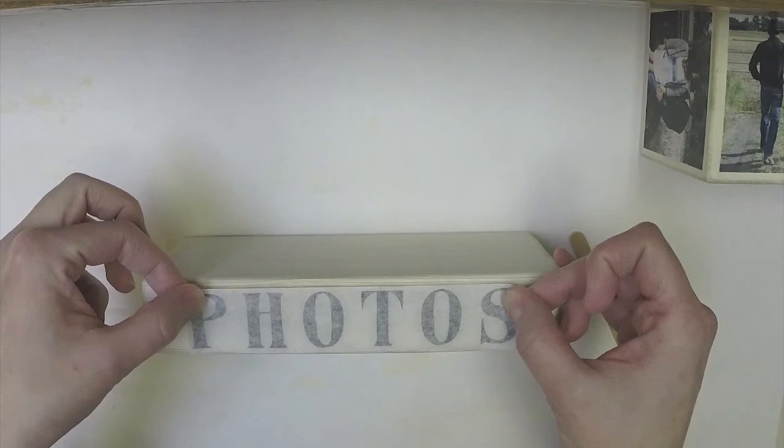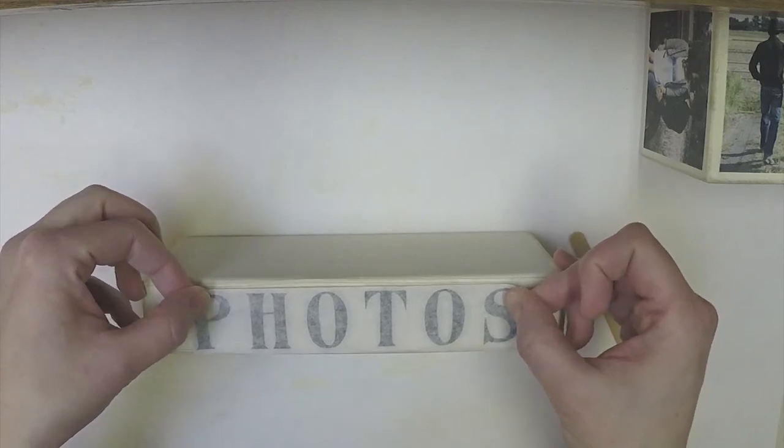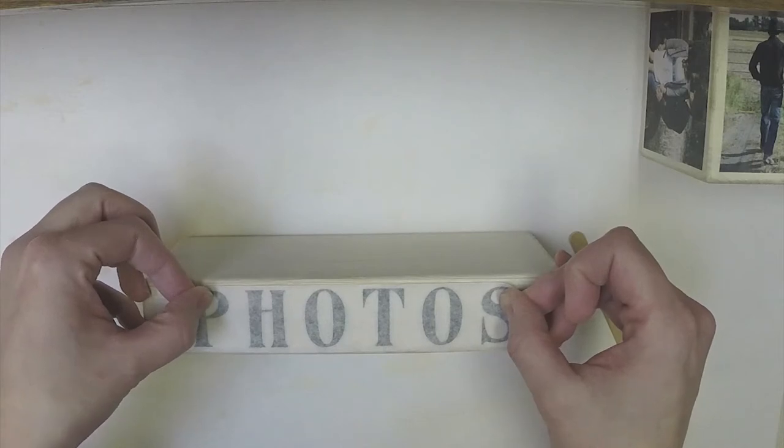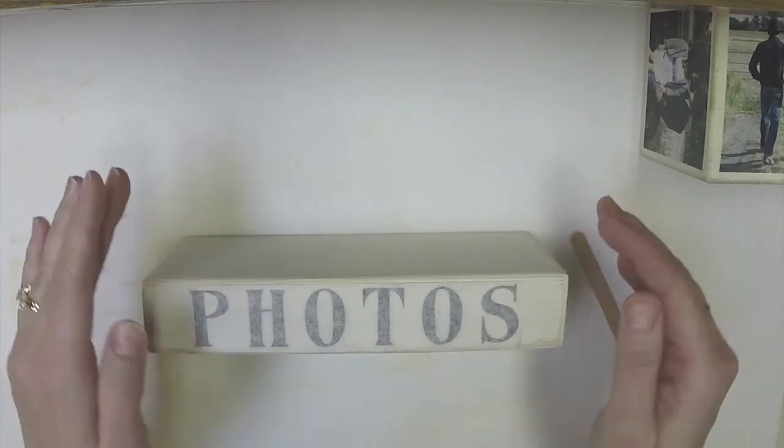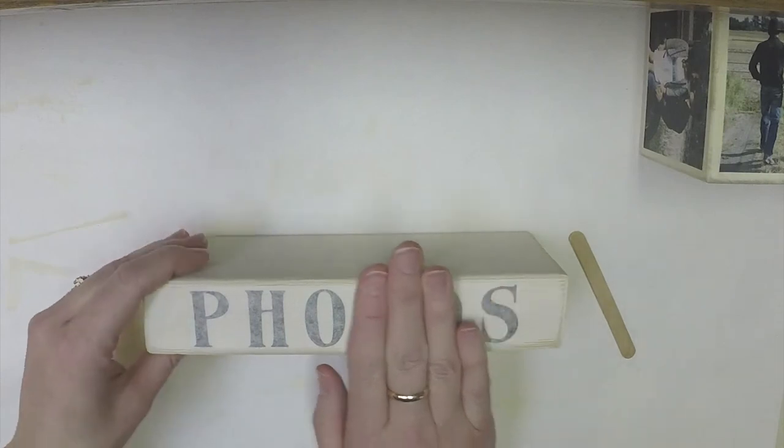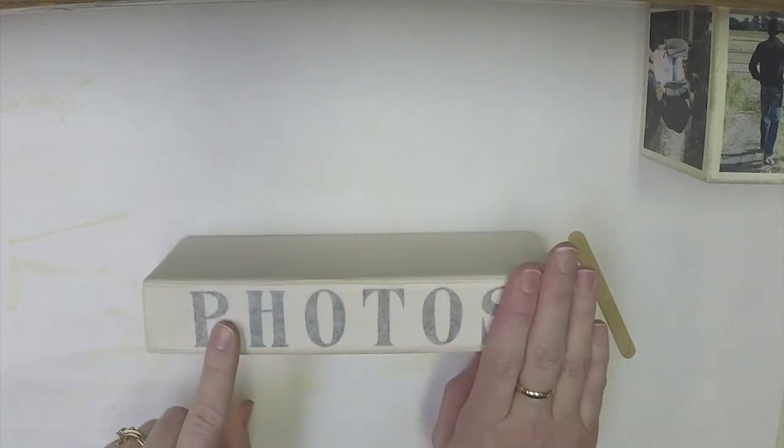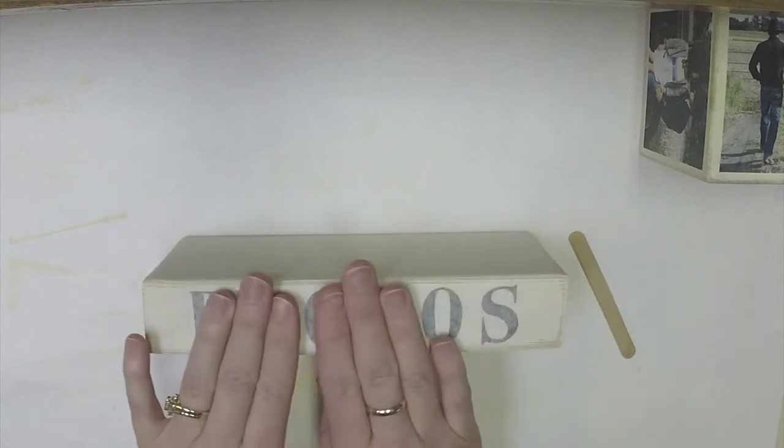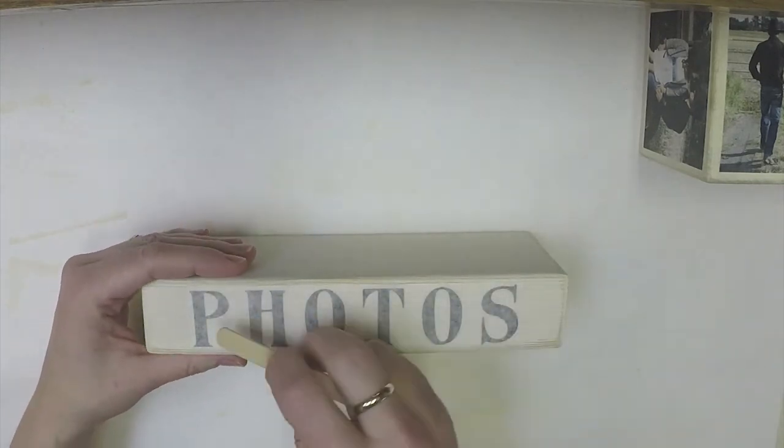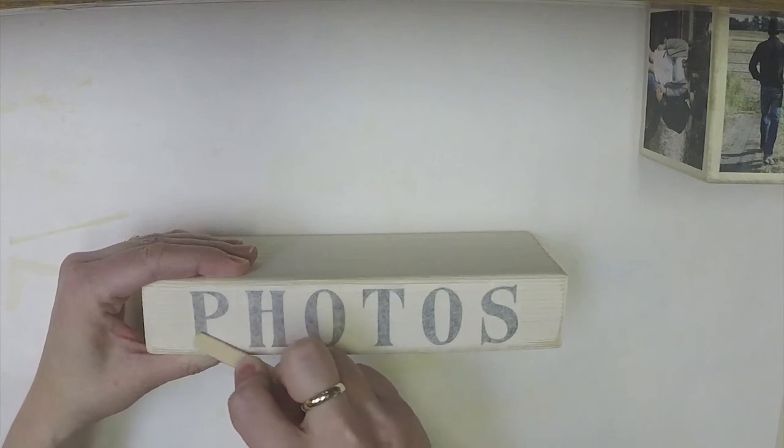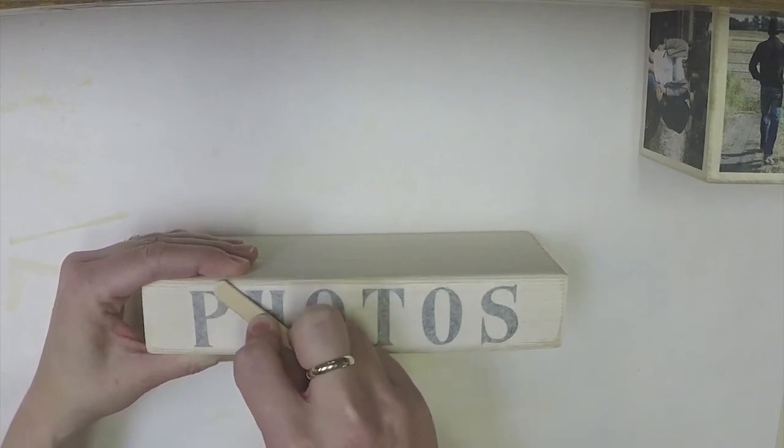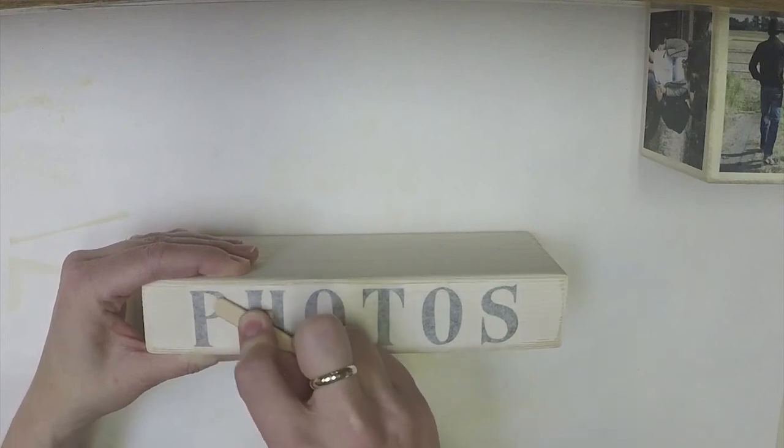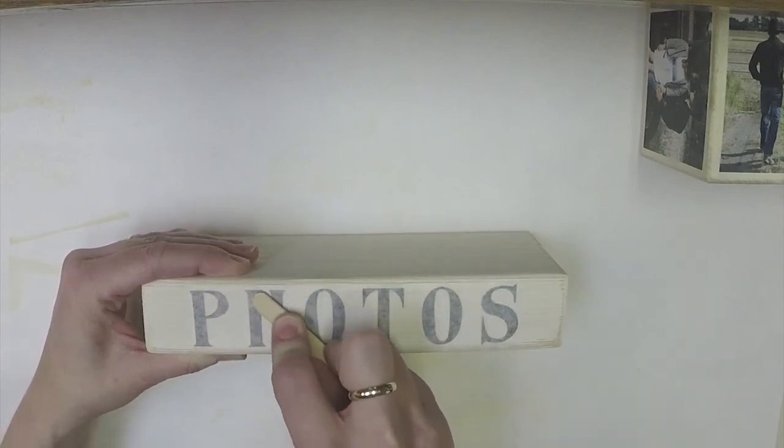Now the transfer paper is just a little bit sticky which works great because you can attach it where you want it to go and don't have to worry about the word moving as you're rubbing the letters off. So when you have it where you want it just take your popsicle stick again and rub over the top of the letters making sure that you have all the corners especially and just work on each letter at a time until you're sure that it is stuck to the wood.